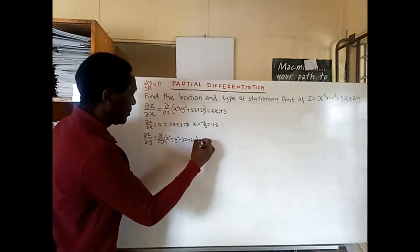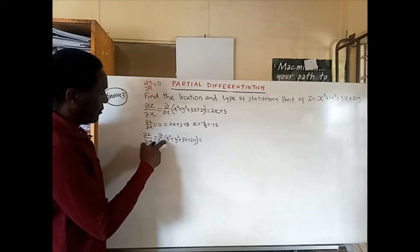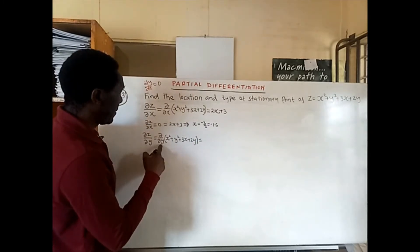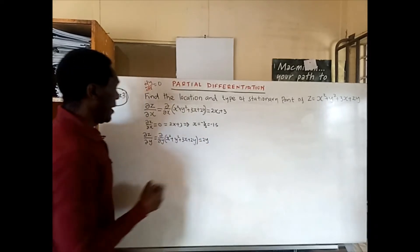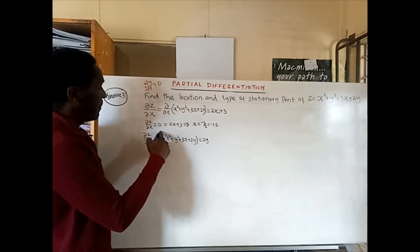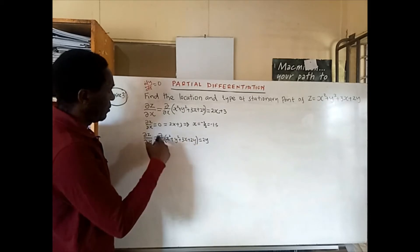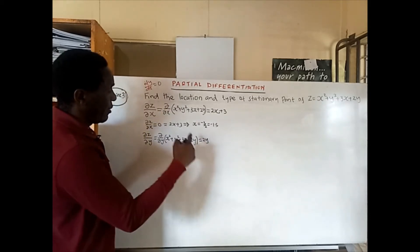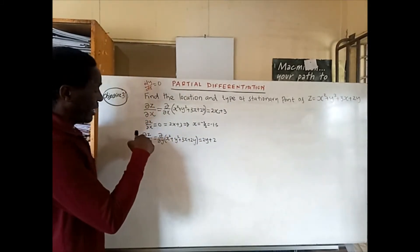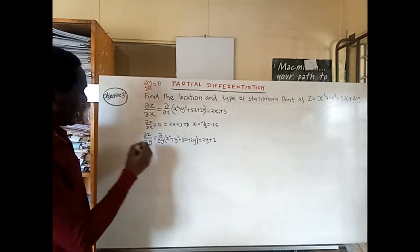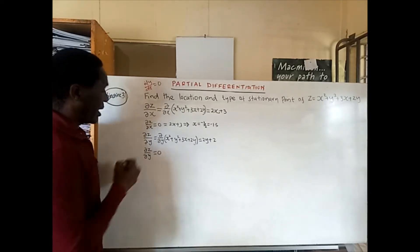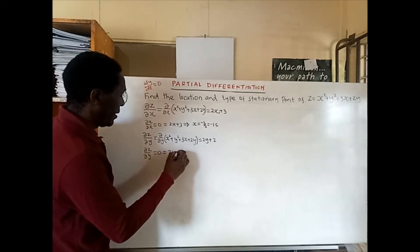Now we take the partial derivative of z with respect to y. The partial derivative of x squared with respect to y is 0, the partial derivative of y squared gives us 2y, the partial derivative of 3x with respect to y is 0 since x is a constant, and the partial derivative of 2 gives us 0. So partial derivative of z with respect to y equals 2y plus 2. At a turning point, this gradient is equal to zero, so 2y plus 2 equals zero.